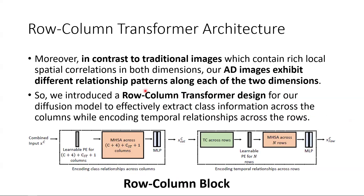Moreover, in contrast to traditional images which contain rich local-spatial correlations in both dimensions, our AD images exhibit different relationship patterns across each of the two dimensions. Specifically, in our AD images, there is a strong sequential ordering between adjacent rows, such as between temporal frames, and this differs from the inter-class relationships between adjacent columns. For example, for the action class AD image, the columns indicate the action classes. So, we introduce a row-column transformer design for our diffusion model to effectively extract class information across the columns while encoding temporal relationships across the rows. A row-column block is shown here.